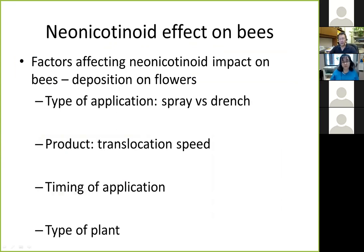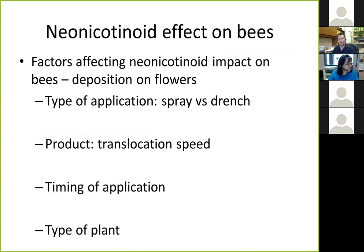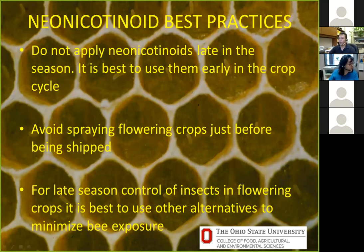For those producing cucurbits or flowering crops in high tunnels, neonicotinoids can impact pollinators such as bees. Best practice: apply these compounds early in the season as a drench for prevention. When plants are already producing many flowers, avoid applying neonicotinoids during that window to protect pollinators. This is a key best practice recommendation for neonicotinoid use — apply early, not late in the season.